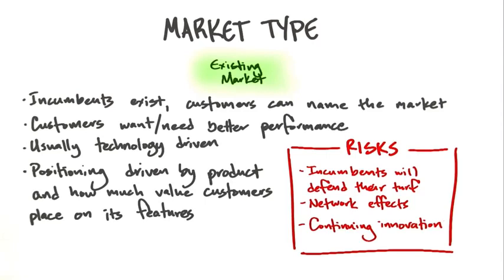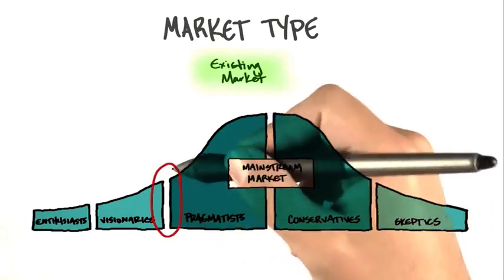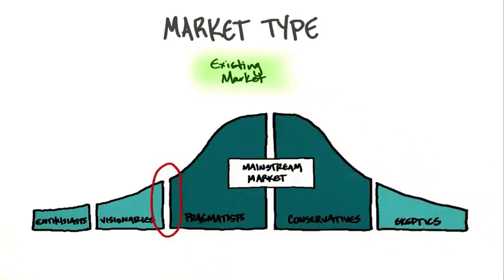One of the interesting things is trying to figure out what sales look like and what's the adoption rate in a new market. It turns out one of the interesting curves for startup companies is a technology lifecycle adoption curve popularized by Jeff Moore in a book called Crossing the Chasm. Moore postulated that there was a gap — a chasm — between visionaries and the mainstream, pragmatic, and conservative market.